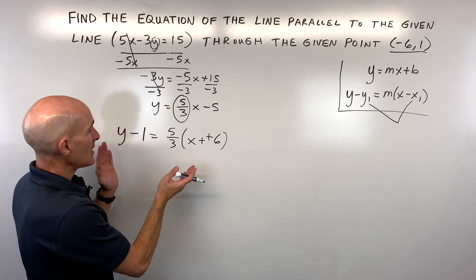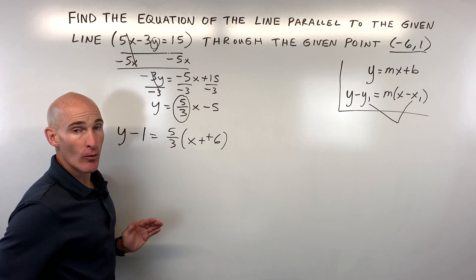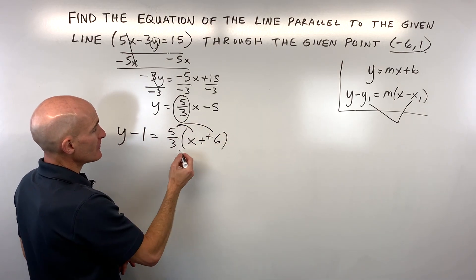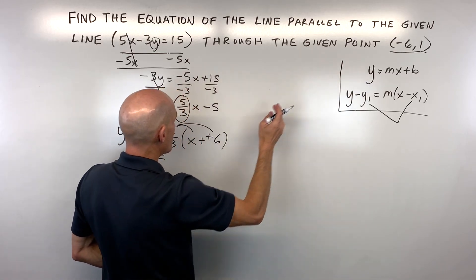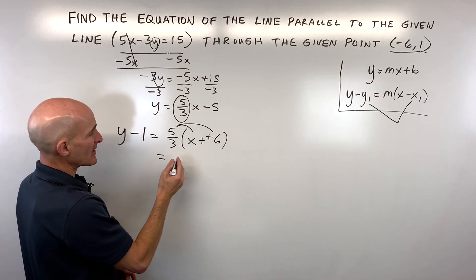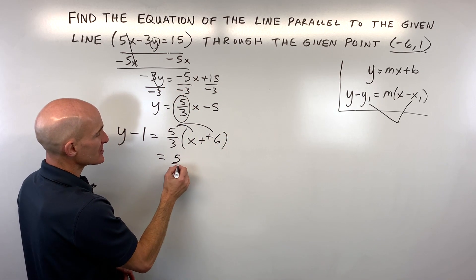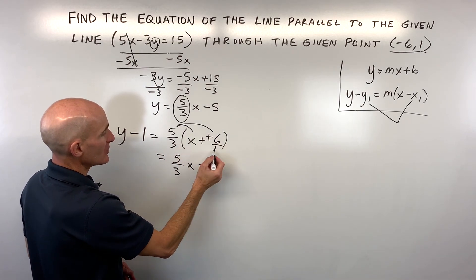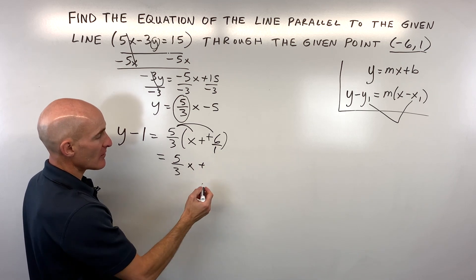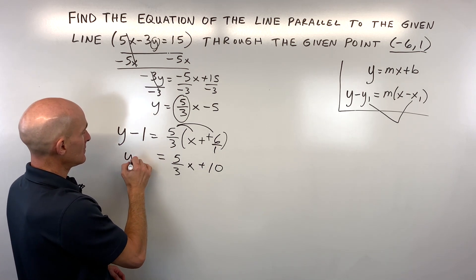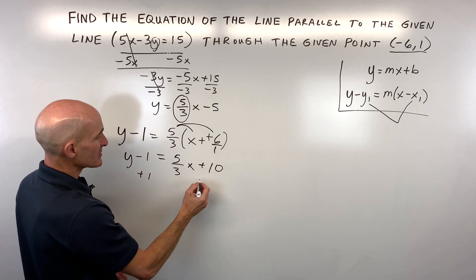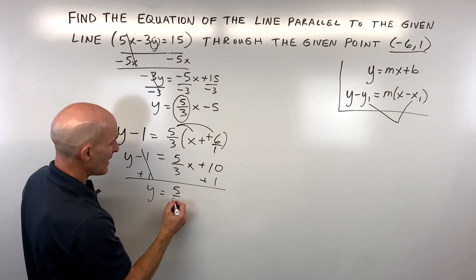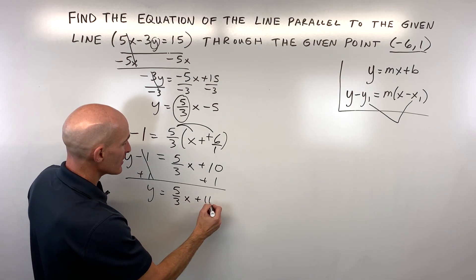You can leave it like this if your teacher's okay with the point-slope form. Or you can distribute this 5 thirds and rewrite it in slope-intercept form by solving for y. This comes out to 5 thirds times x, plus 5 times 6 is 30. 3 times 1 is 3, 30 divided by 3 is 10. Then if we add 1 to both sides to get y by itself, we get y equals 5 thirds x plus 11.